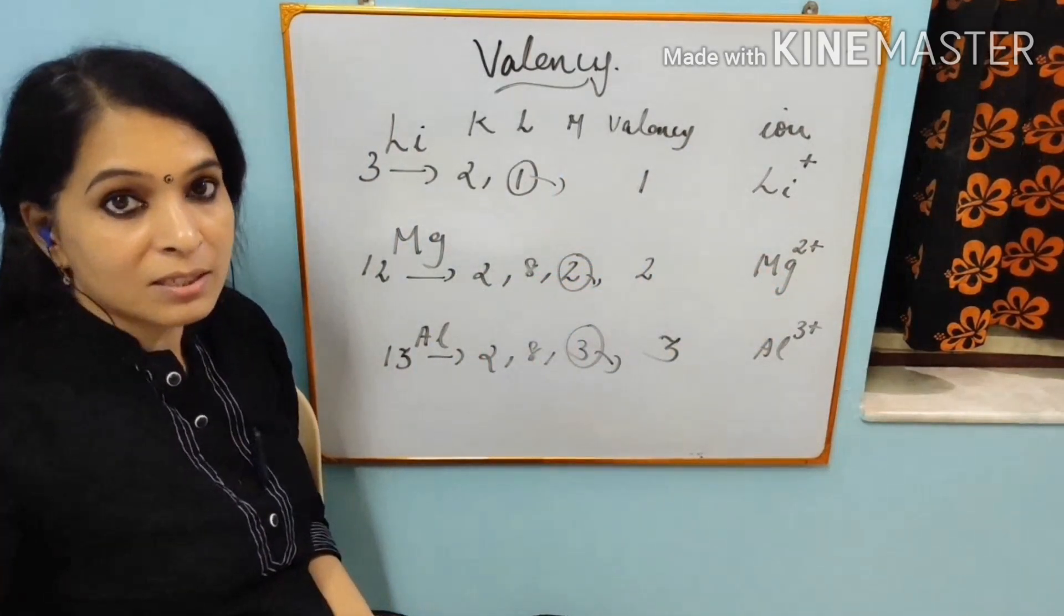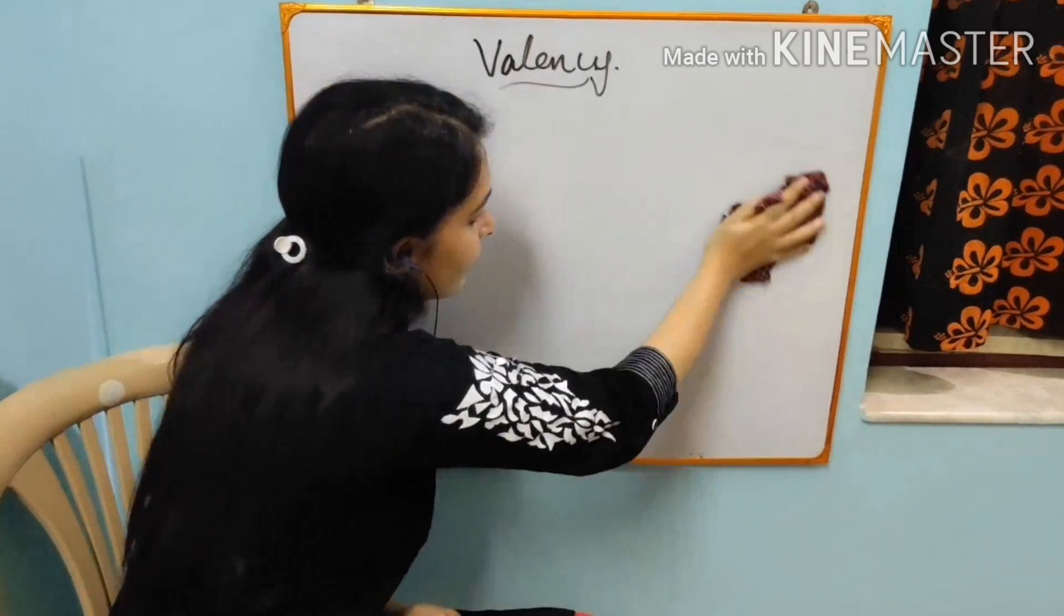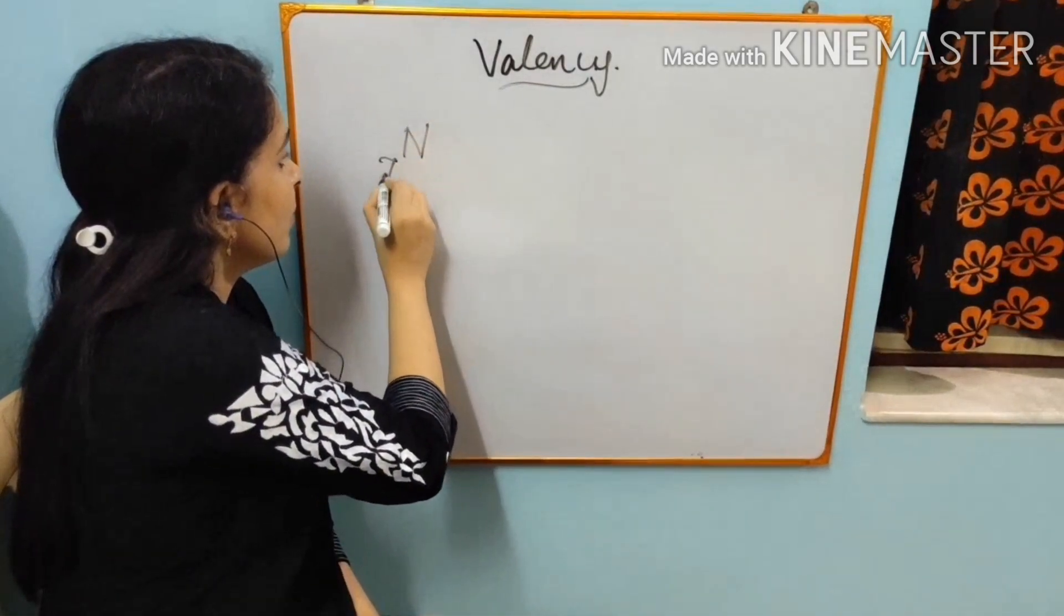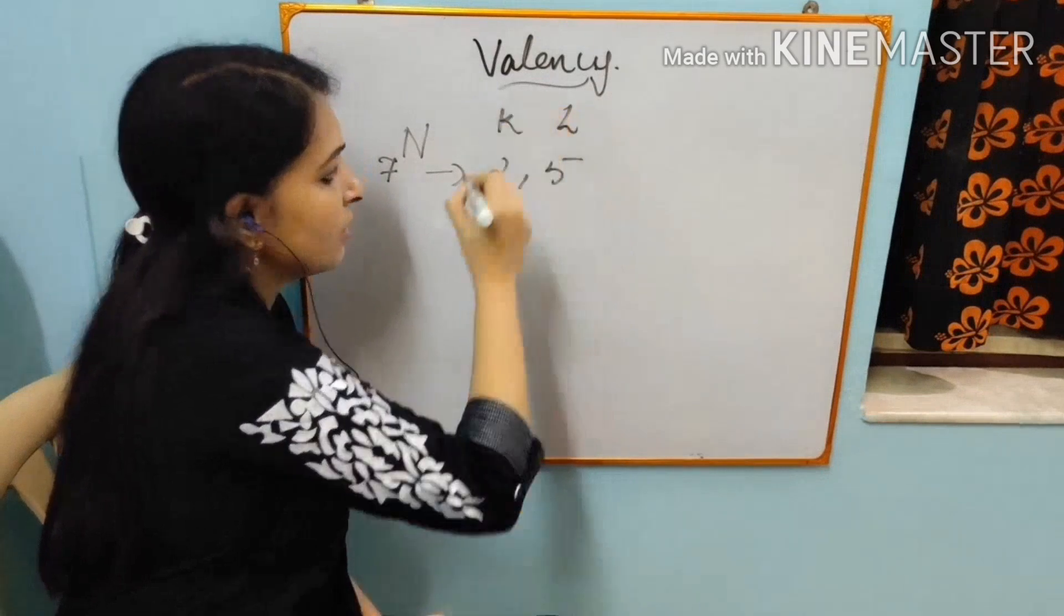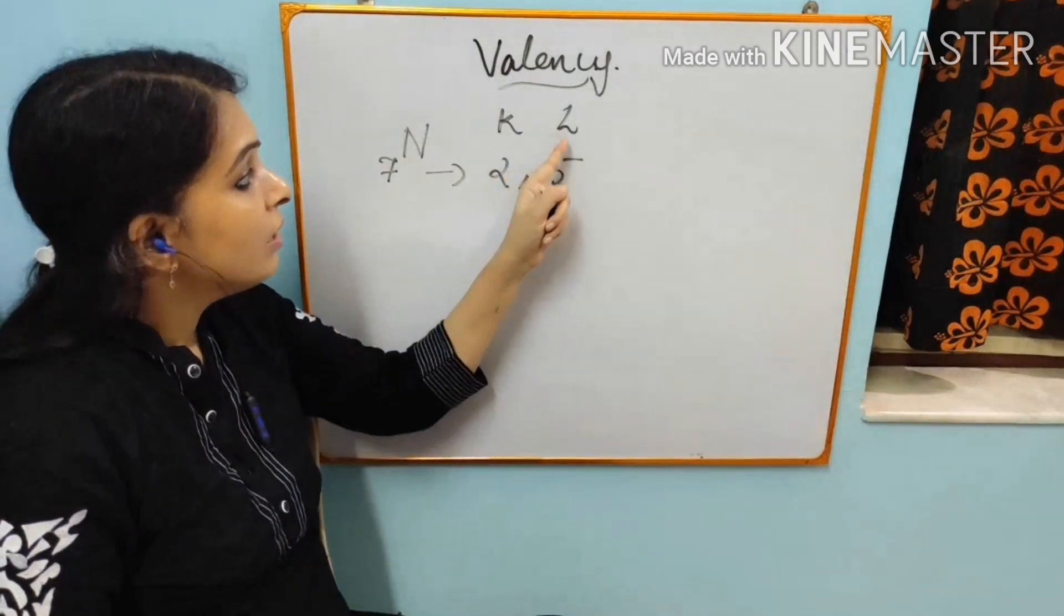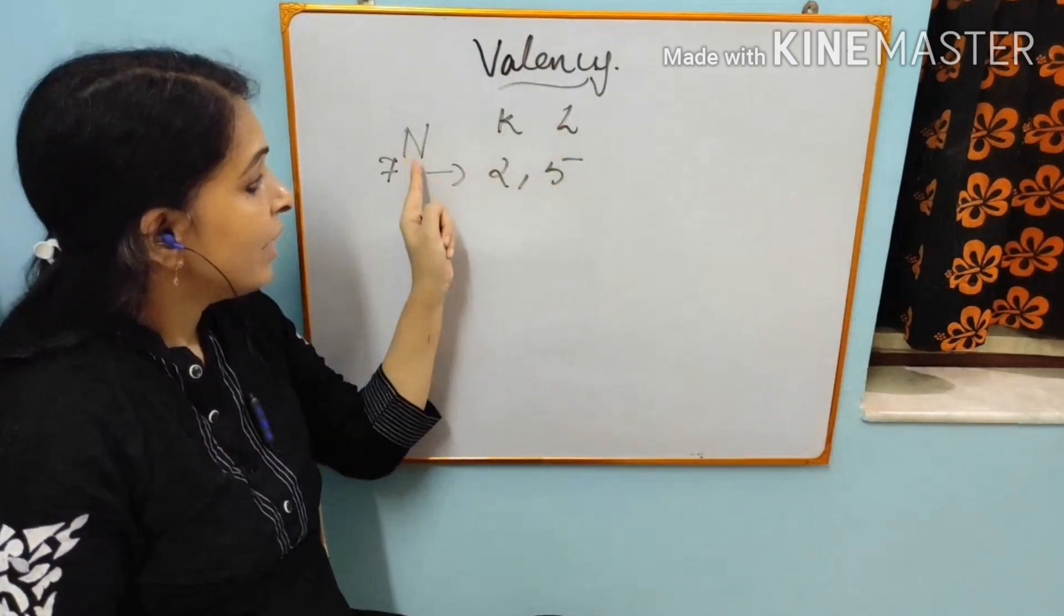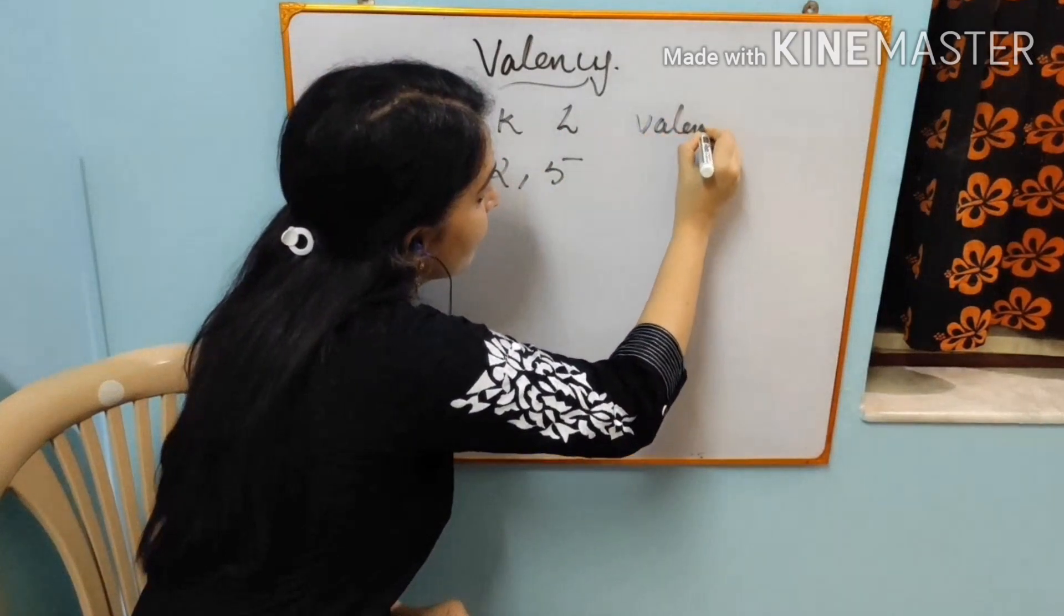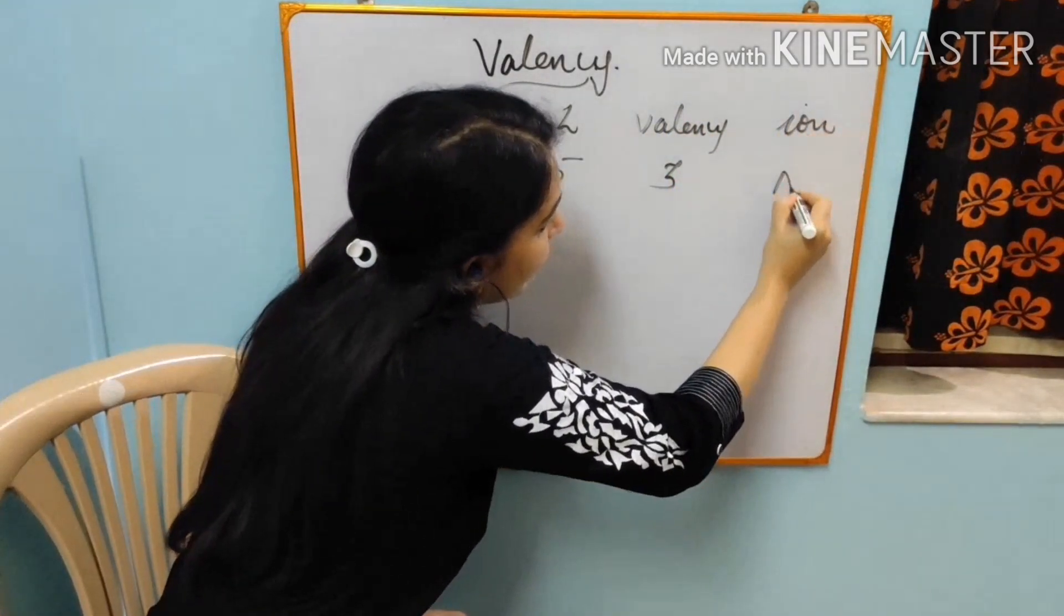Now you will see some non-metals. I am rubbing this. If you want to note down, please note it down. Now, I am taking the non-metals, nitrogen. Nitrogen is 7, atomic number 7. Electronic configuration is 2, 5. K, L shell. And I told you, non-metals are acceptors. They will accept electrons to make the outermost shell of it completed. That means 8 electrons in the outermost shell. So this nitrogen needs three more electrons to complete its octet. So valency is 3. And it will accept three electrons. So it will become N3- ion.